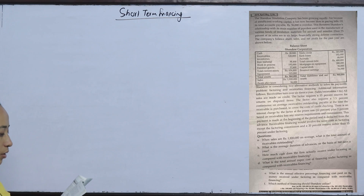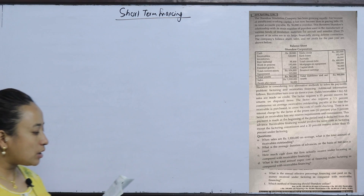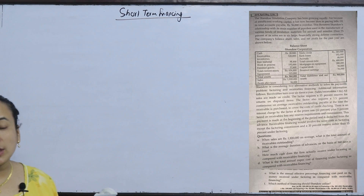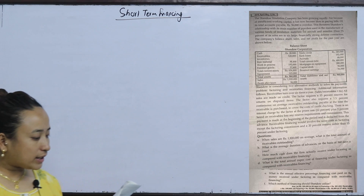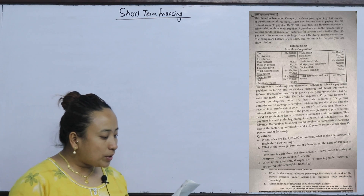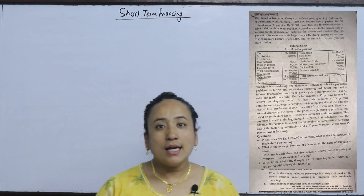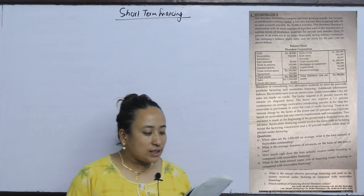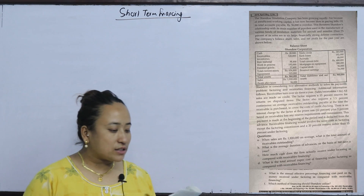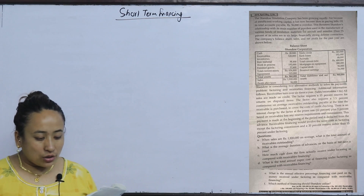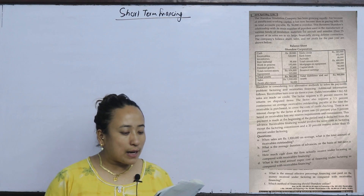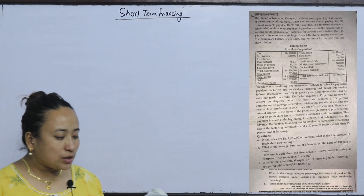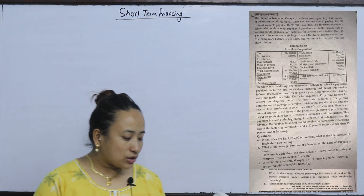The Sando Insulation Company has been growing rapidly, but because of its insufficient working capital, it has now been slow in paying bills. Of its total accounts payable, 96,000 is overdue. This threatens its relationship with its main supplier of powders used in the manufacture of various kinds of insulation materials for aircraft and missiles. Over 75% of its sales are to 6 large, financially strong defence contractors.